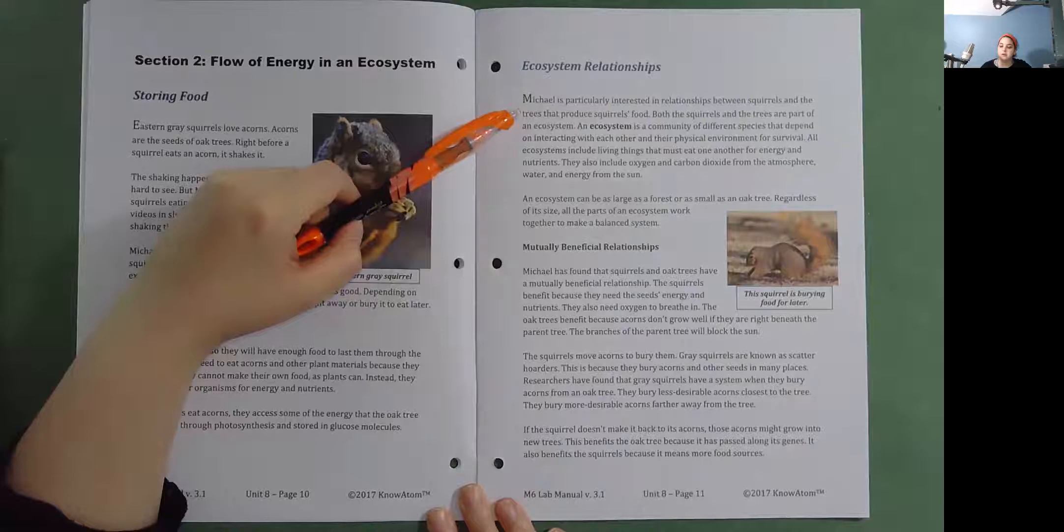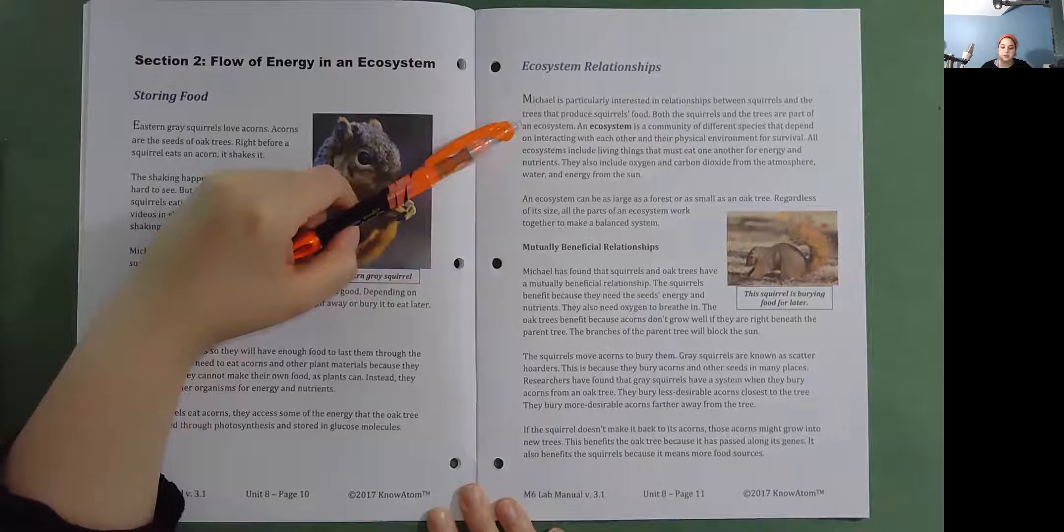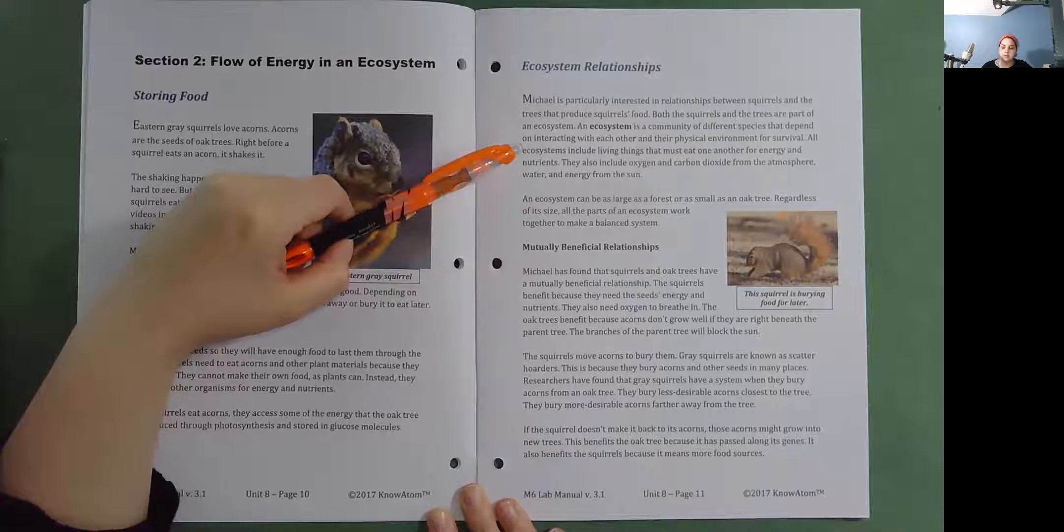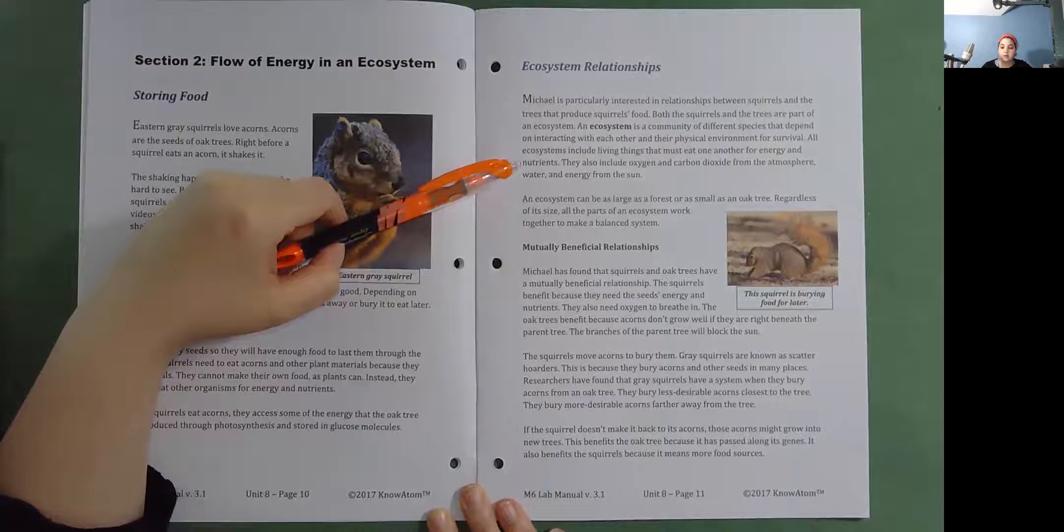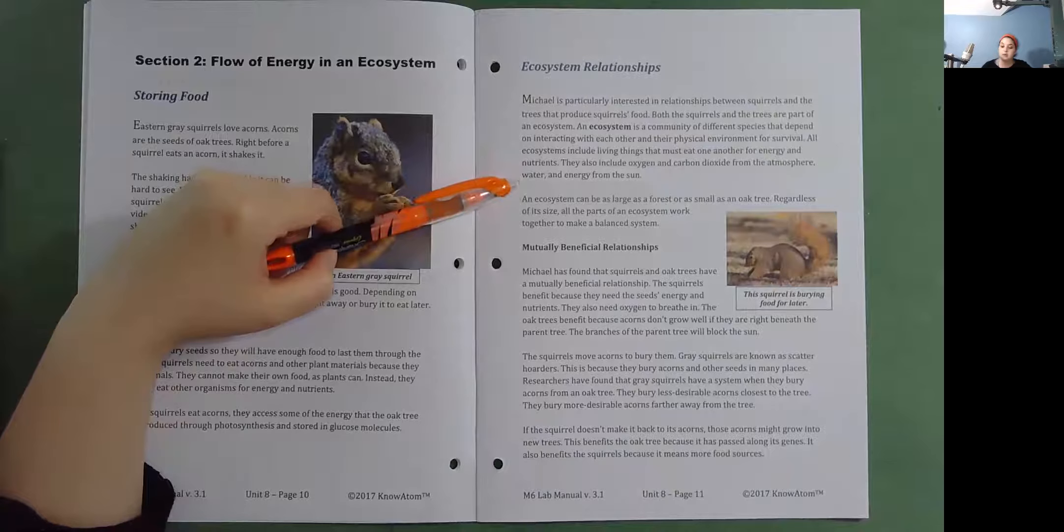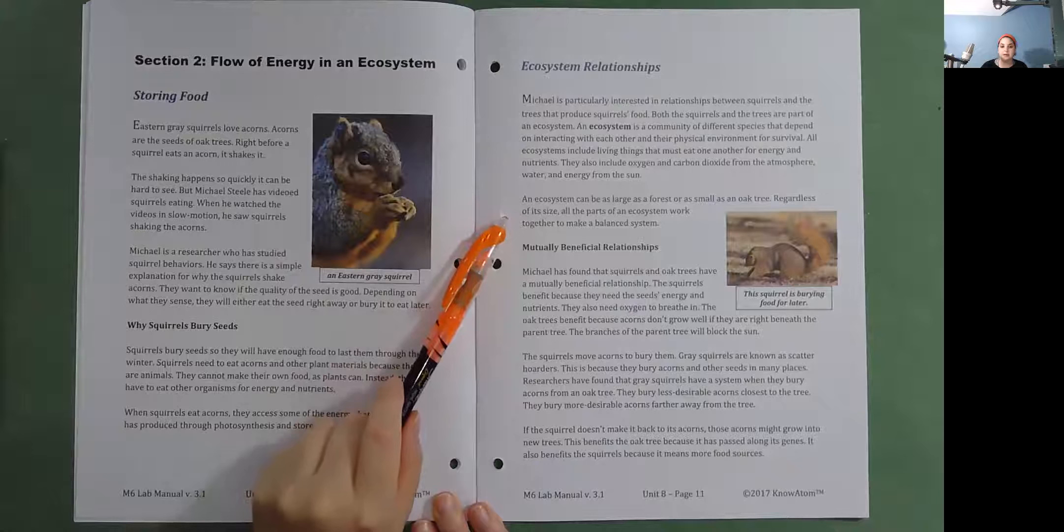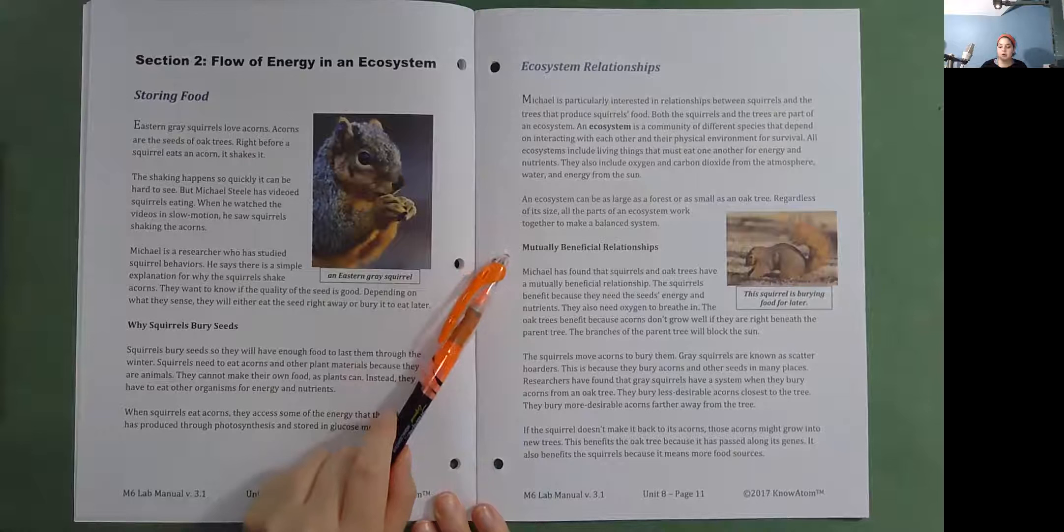Michael is particularly interested in relationships between squirrels and the trees that produce squirrel food. But both the squirrels and the trees are part of an ecosystem. An ecosystem is a community of different species that depend on interacting with each other and their physical environment for survival. All ecosystems include living things that must eat one another for energy and nutrients. They also include oxygen and carbon dioxide from the atmosphere, water, and energy from the sun. An ecosystem can be as large as a forest or as small as an oak tree. Regardless of its size, all the parts of an ecosystem work together to make a balanced system.